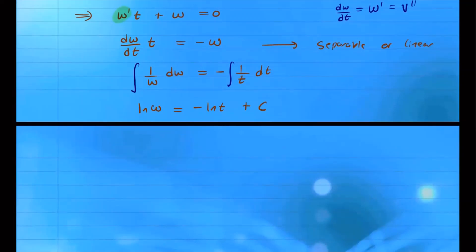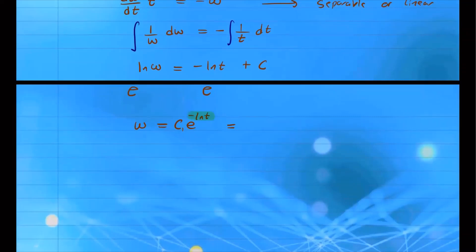To solve for w, we exponentiate both sides: w equals e to the negative ln of t plus c. By laws of exponents, e to the c is just a constant, which we call c1. Using the property of logarithms, e to the negative ln of t equals t to the negative 1. Therefore, w equals c1 times t to the negative 1, or simply c1 over t.